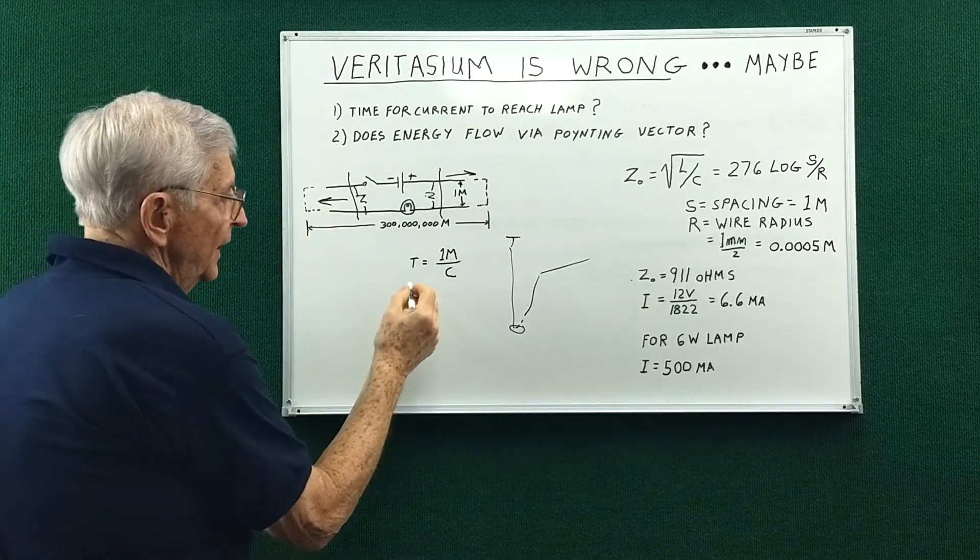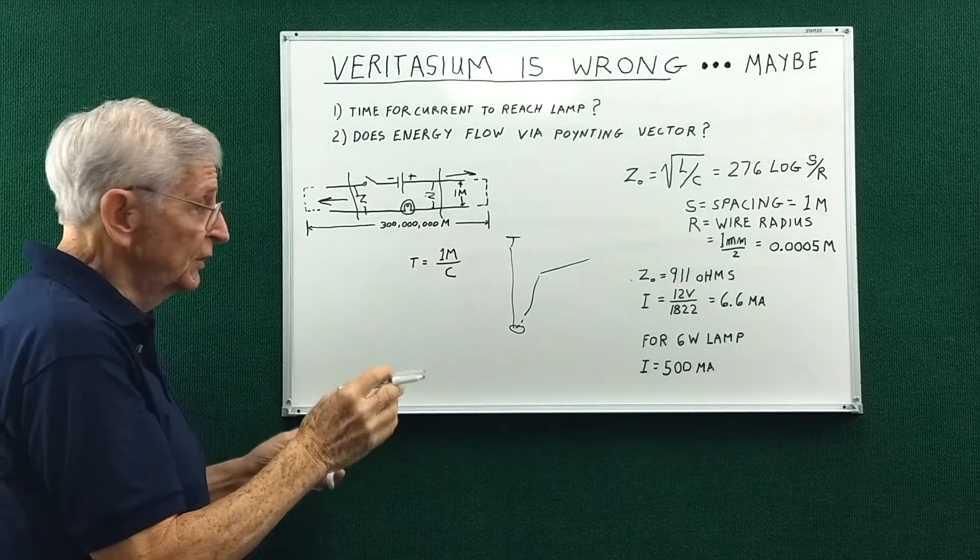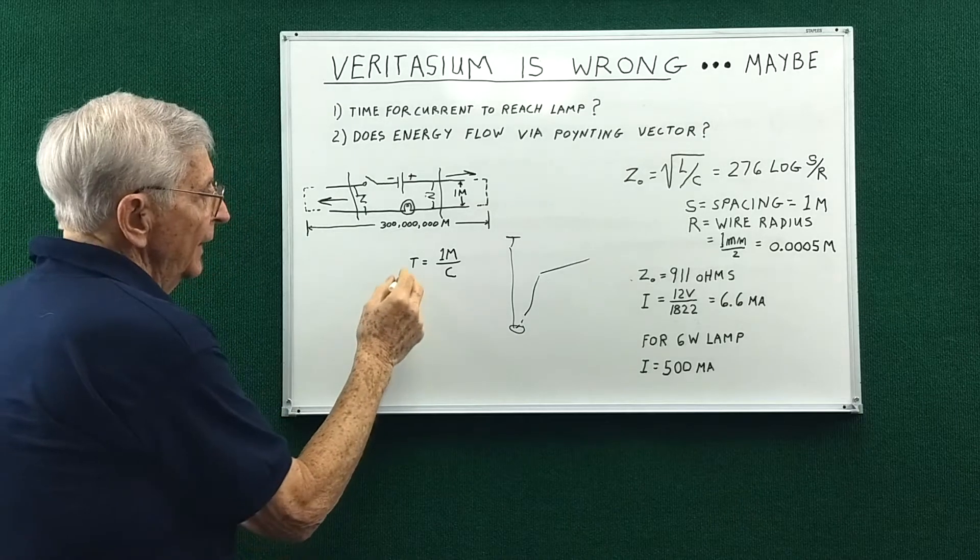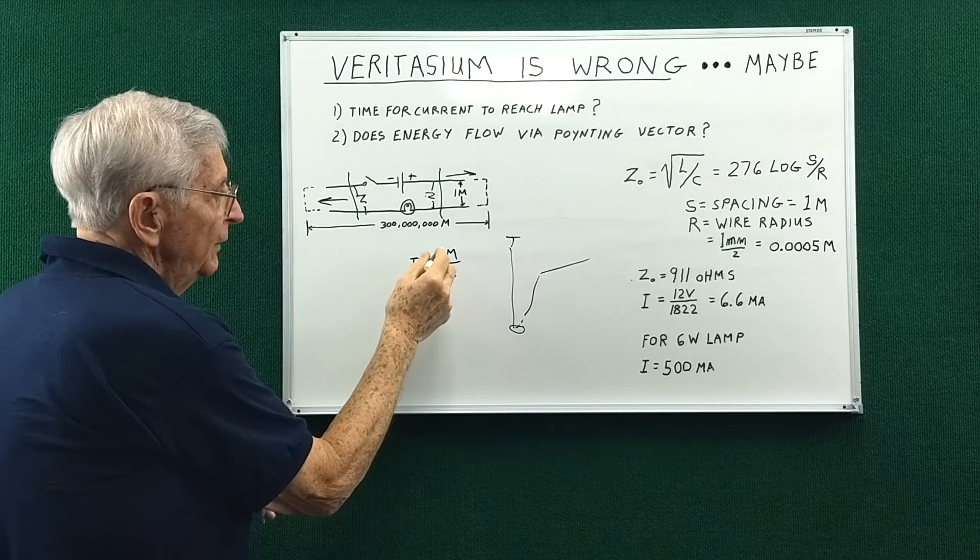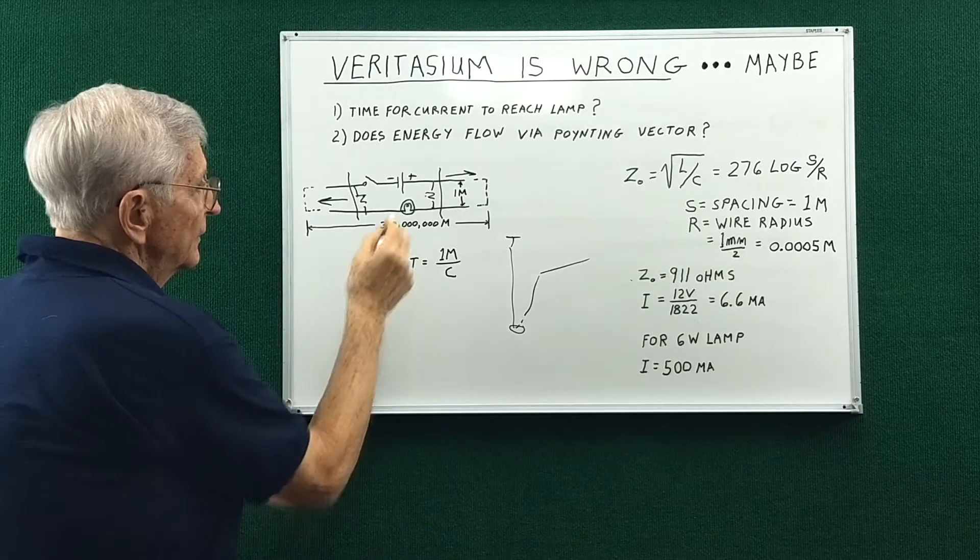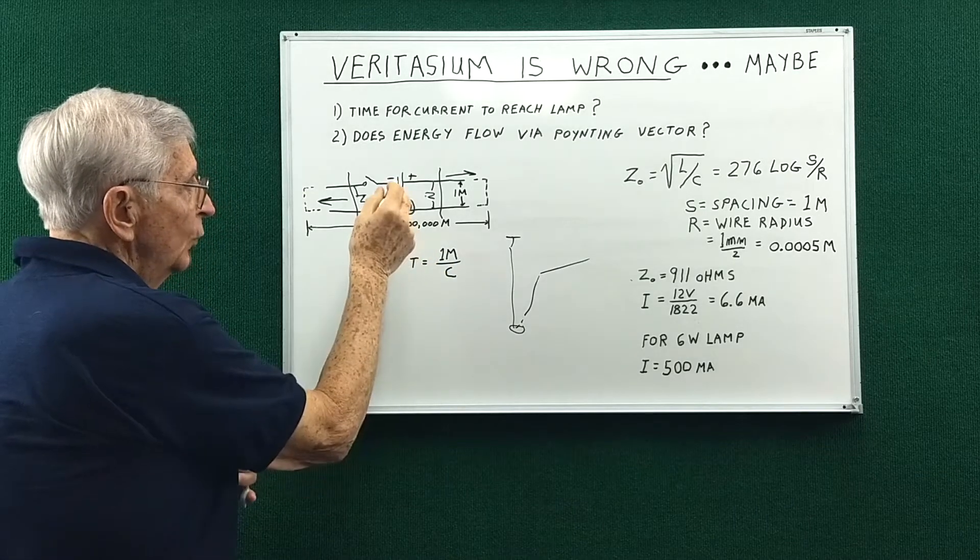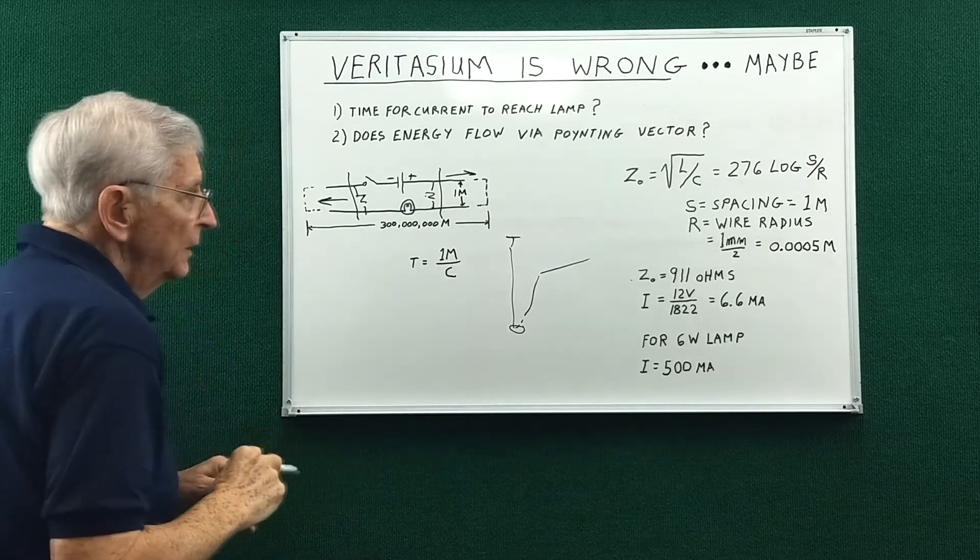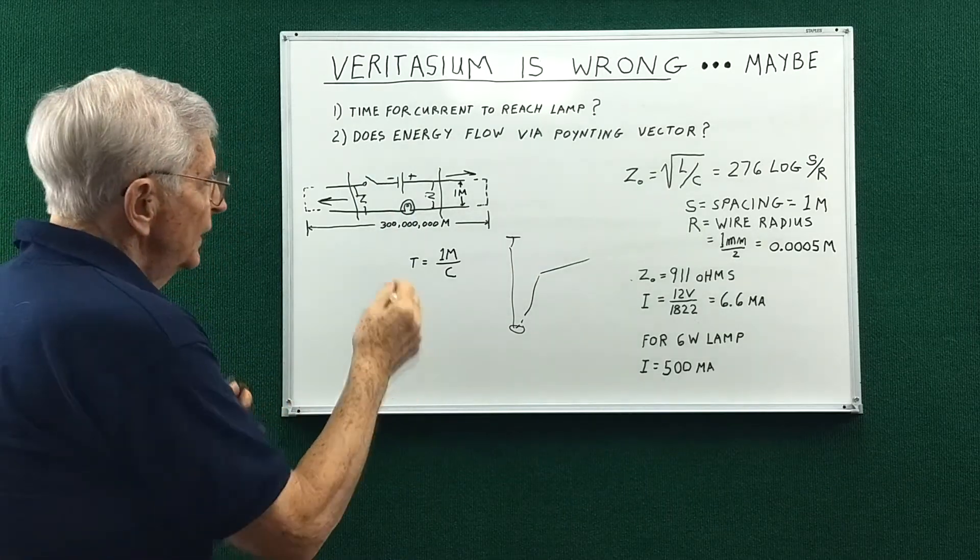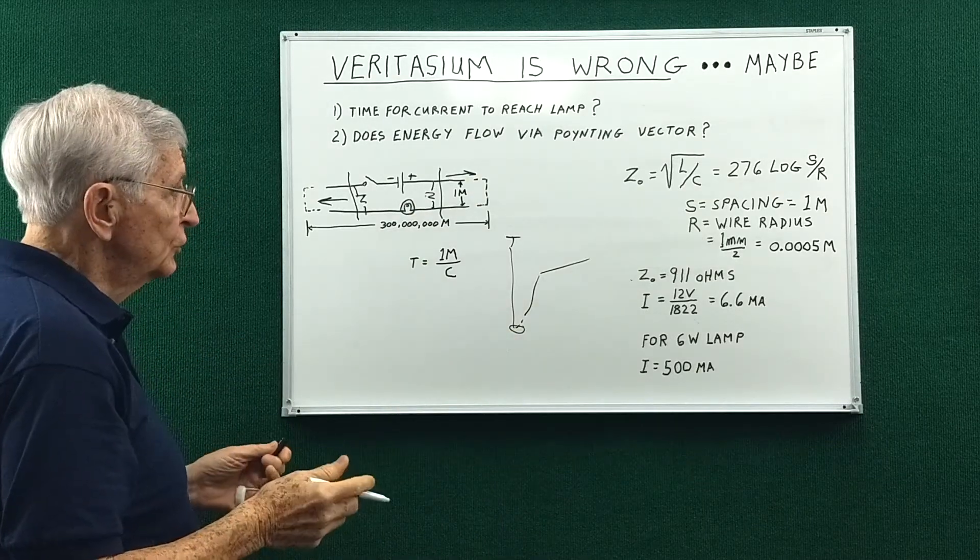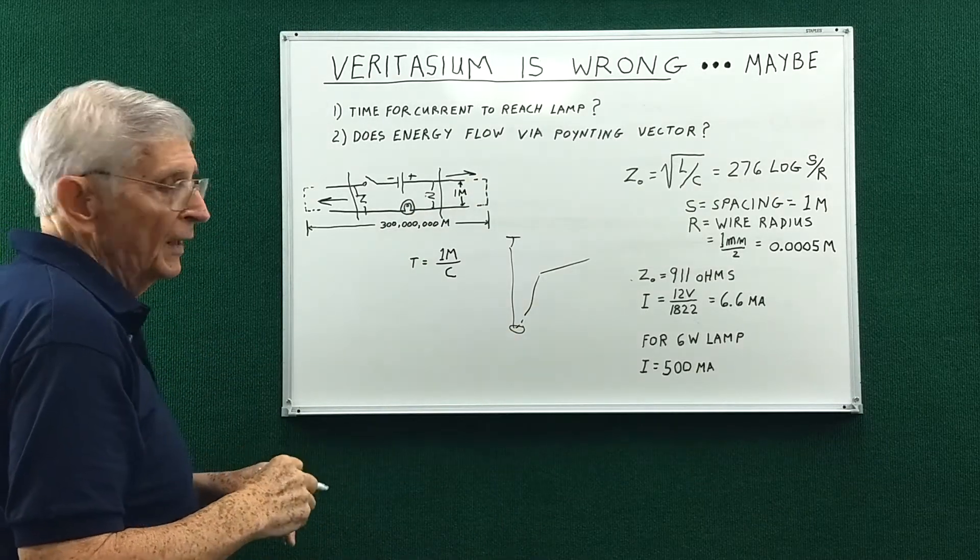And Derek's answer was a multiple question, multiple answer question. And he states the time will be 1 meter divided by the speed of light, just the lamp is 1 meter from the battery. And using the transmission line type solution, I agree with that.